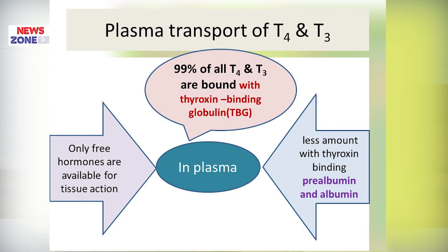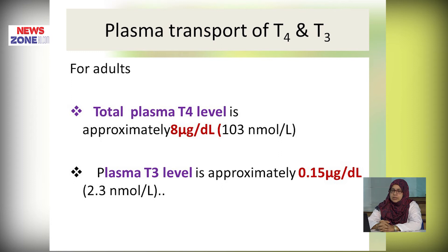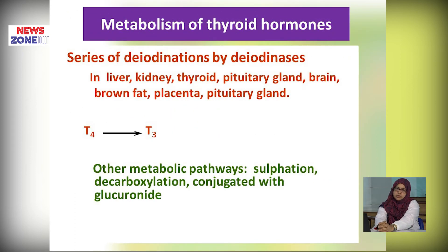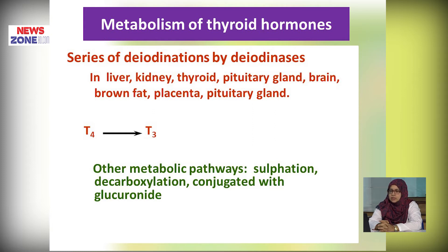Regarding transport of T3 and T4: in plasma, T4 is mainly transported in bound form — 99 percent bound with thyroid binding globulin, and in lesser amounts with thyroid binding prealbumin and albumin. Only free hormones are available for tissue actions. Plasma level of T4 in adults is about 8 micrograms per dL and T3 is about 0.15 micrograms per deciliter. Metabolism occurs by deiodination enzymes in the liver, kidney, thyroid, pituitary gland, brain, brown fat, and placenta. Other metabolic pathways include sulfation, decarboxylation, and conjugation with glucuronides.